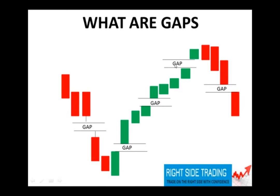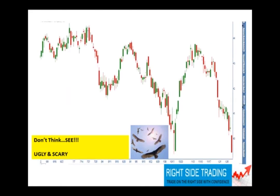The ones that end a trend are typically called exhaustion gaps — and that's what a vulture gap is. The ones that begin trends are called breakaway gaps. So the question is, how do we know if a gap is a breakaway gap or an exhaustion gap? Literally, this is basically what we discovered and perfected and now trade consistently. A vulture gap is an exhaustion gap, and it usually appears when everything is looking the worst.